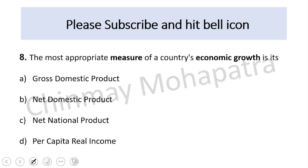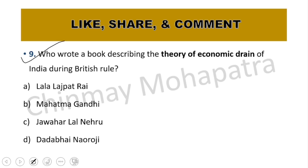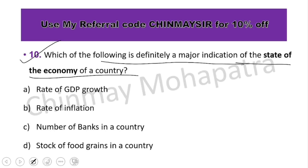Question number eight: the most appropriate measure of a country's economic growth is its per capita real income. Question number nine: who wrote the book describing the theory of economic drain of India during British rule? The right answer is Dadabhai Naoroji.